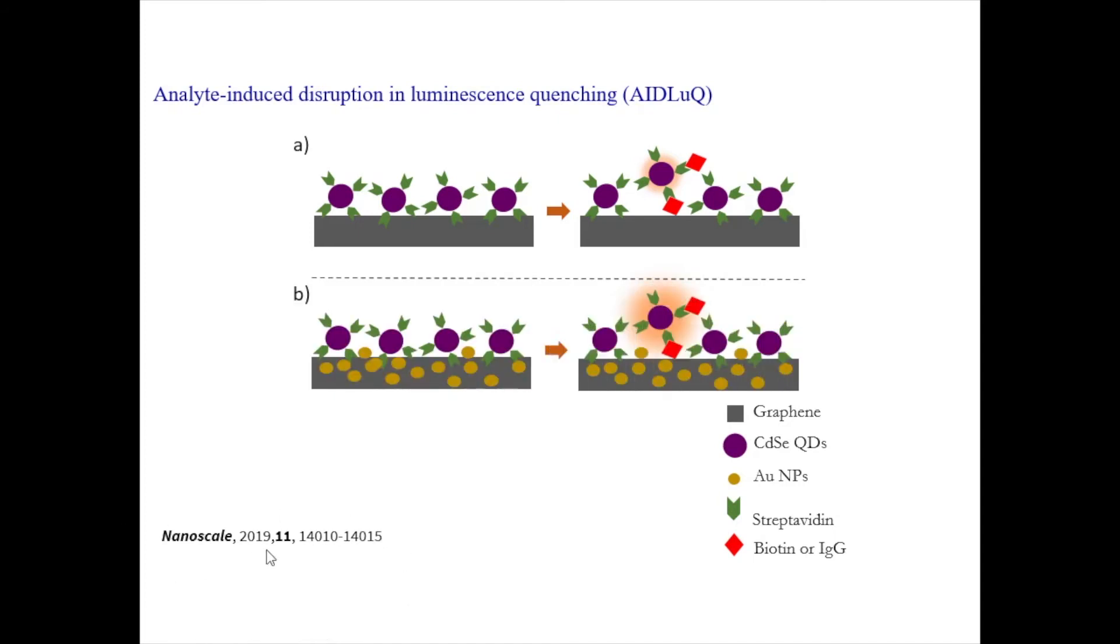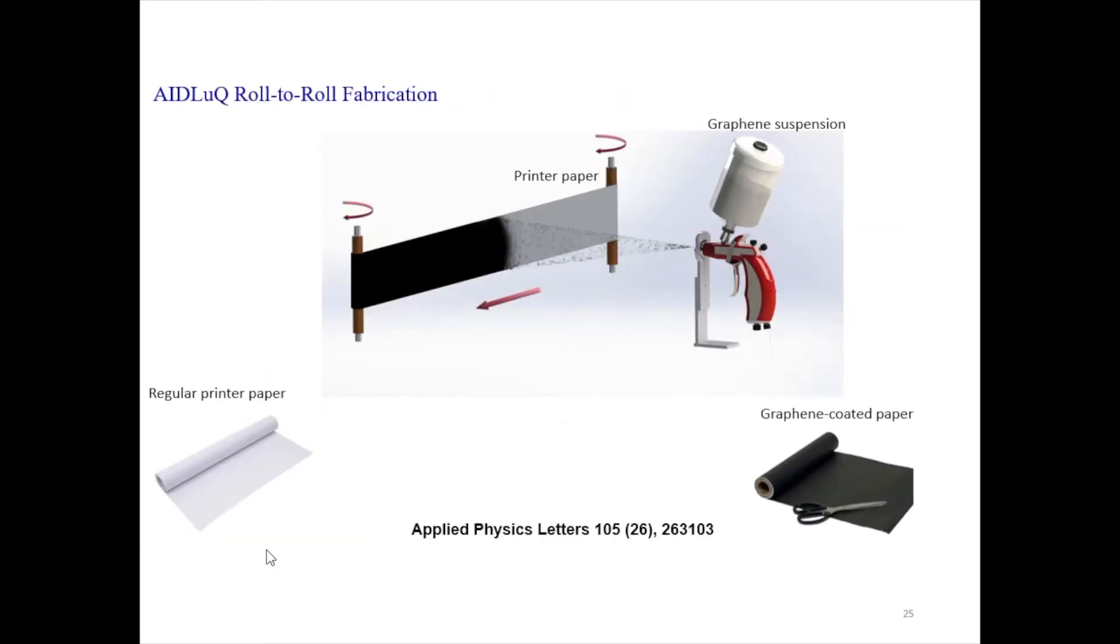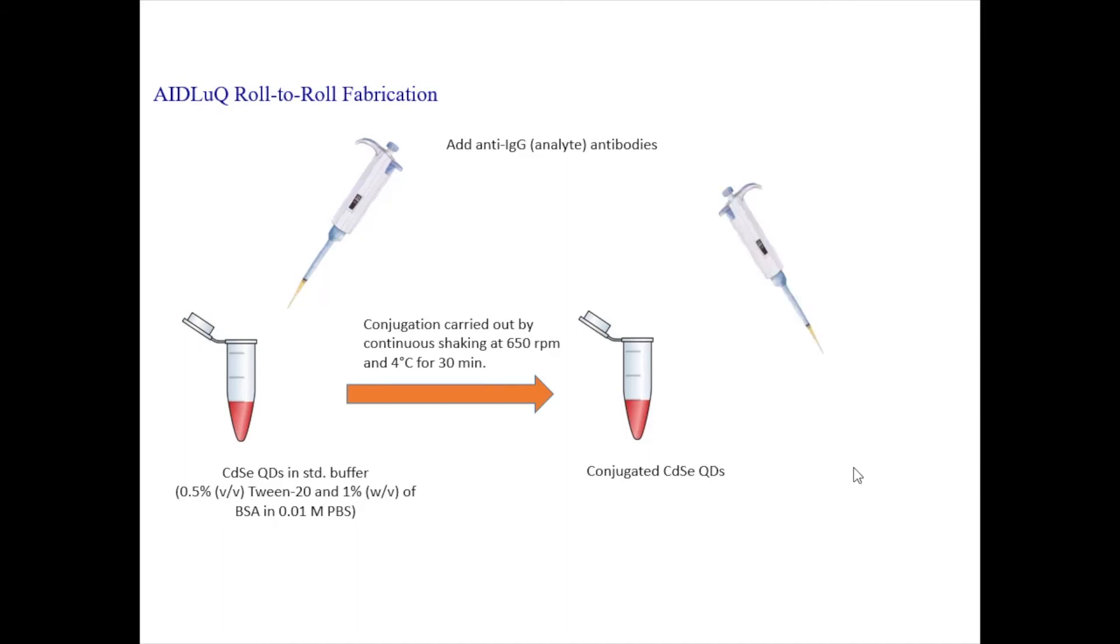And so you can see how we make this graphene paper. We just take a regular printer paper and we make a graphene suspension in isopropanol with gold nanoparticles. And then we spray coat it onto this regular printer paper. So at the end you get this black color graphene coated paper. And then we use cadmium selenide quantum dots. And we coat these cadmium selenide quantum dots with the appropriate antibody based on what we want to detect.